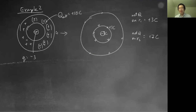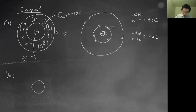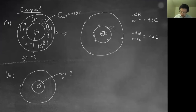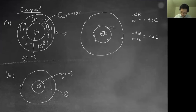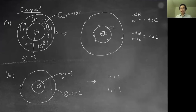As a home exercise, try the same figure but with a positive point charge of plus three inside and the conductor having a net charge of positive ten coulombs. Answer what is the net charge on R1 and on R2. If you can do this, you know everything you need to know about conductors. Now that you understand conductors, we can see how to use these ideas to make a battery.